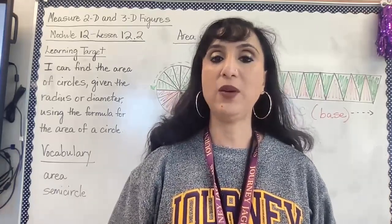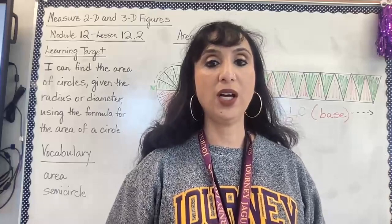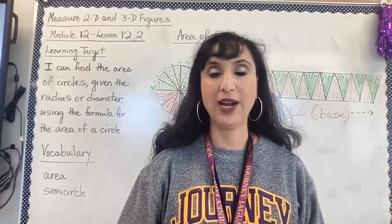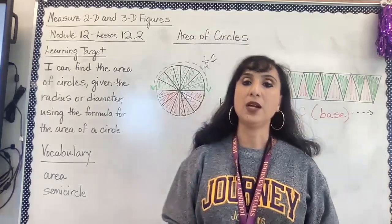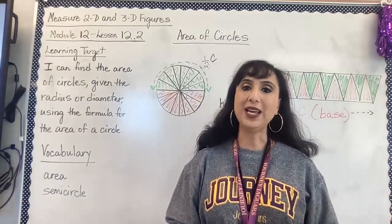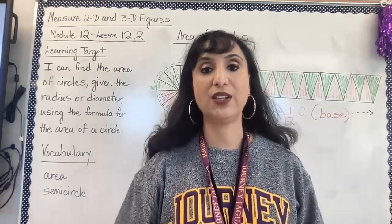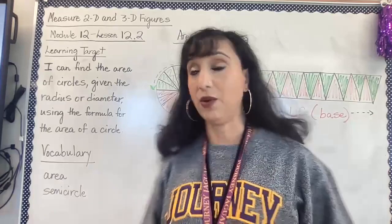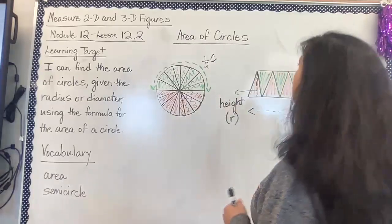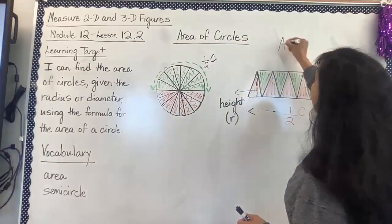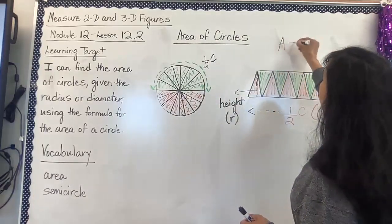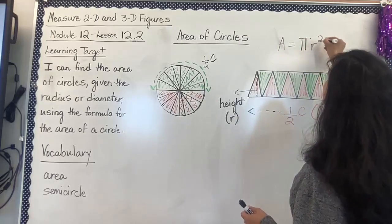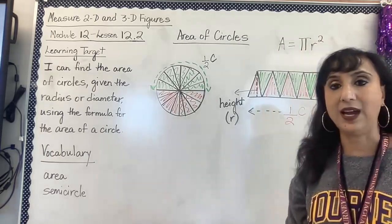The vocabulary that we are going to learn is area and semicircle. So basically, the area of a circle — when we say the formula, it is pi r squared. But I want you to have a comprehension as to how we are getting this pi r squared as the area.